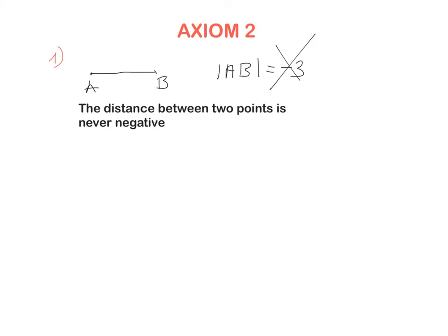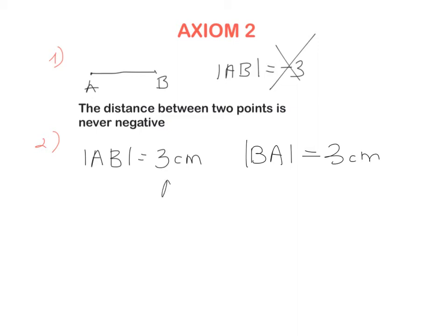The next property: let's say we have a line segment A and B, and we know the distance from A to B is three centimeters. So AB equals three centimeters. What's the distance from B to A? Exactly the same — because it's exactly the same line segment. So BA is also three centimeters. The next statement says: AB is exactly the same length as BA.